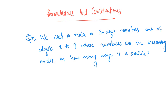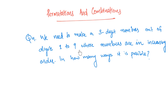Hi friends, this is the permutations and combinations video. We need to make a 3-digit number out of digits 1 to 9, where the numbers are in increasing order. In how many ways is it possible?